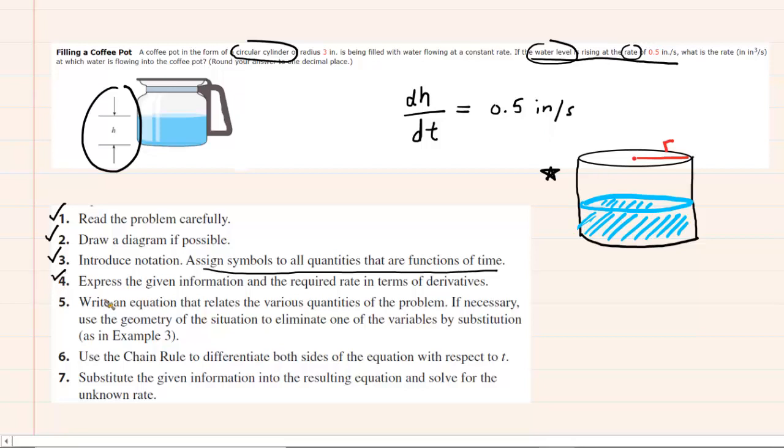And that kind of ties into step four, when it says express the given information and the required rate in terms of derivatives. And so we've kind of already done that with the height, but we should also do that with what we're looking for. It says, what is the rate in inches cubed per second at which water is flowing into the coffee pot? Now inches cubed per second hopefully is indicative to us of volume. So we can symbolize what we're looking for as dv/dt. That would be the rate of change in the volume of the water per unit time or per second in this case.